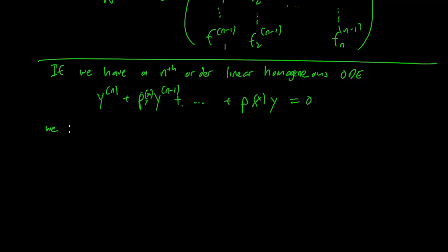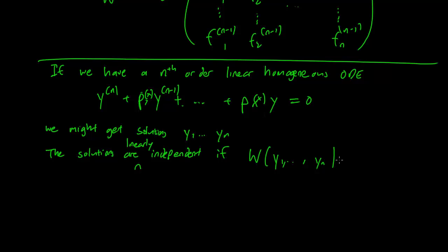And we might get solutions y1 to yn, and we want to check if they are linearly independent or not. The solutions are linearly independent if the Wronskian of the solutions is not zero. The solutions are linearly dependent if the Wronskian equals zero.